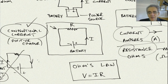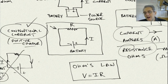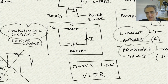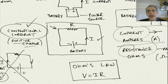Positive charge will flow away from the positive terminal and into the negative terminal — that direction is correct. We're not going to learn actual current direction; we're always going to be dealing with conventional current.